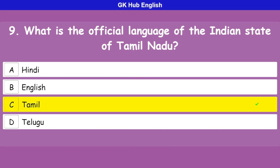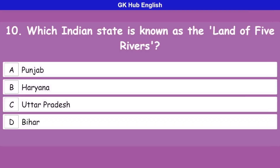Question 10: Which Indian state is known as the land of five rivers? Option A is Punjab, option B is Haryana, option C is Uttar Pradesh, option D is Bihar. Correct answer is Punjab.